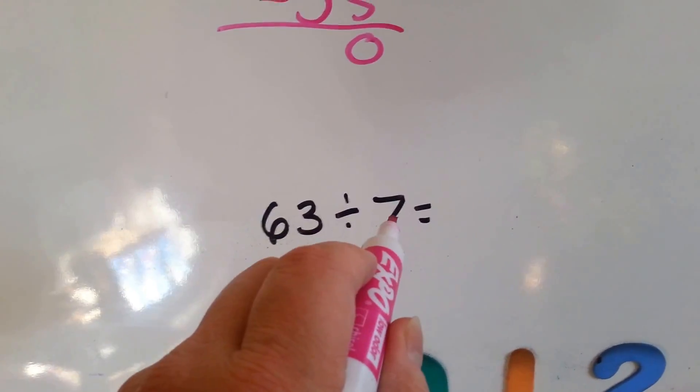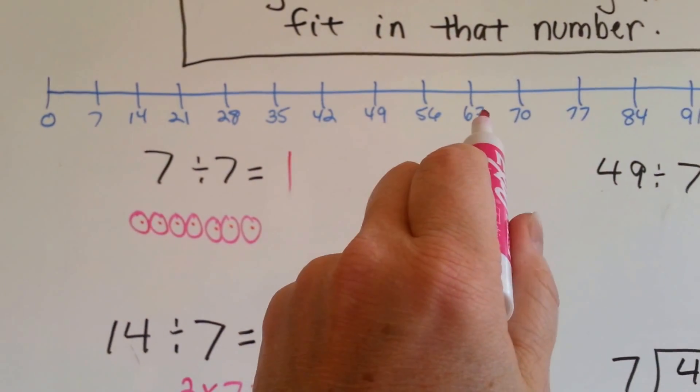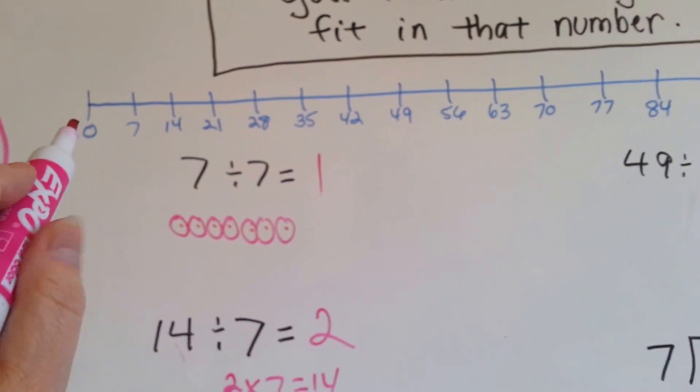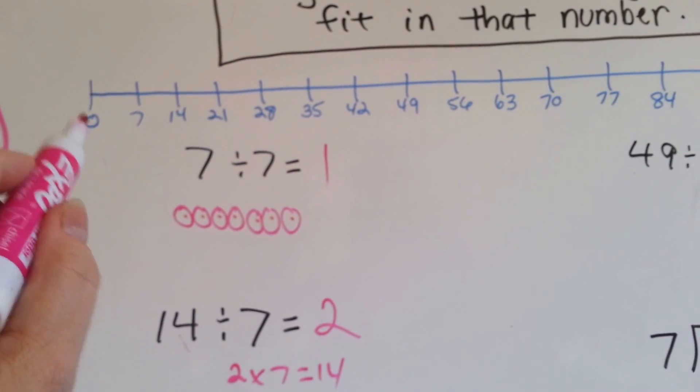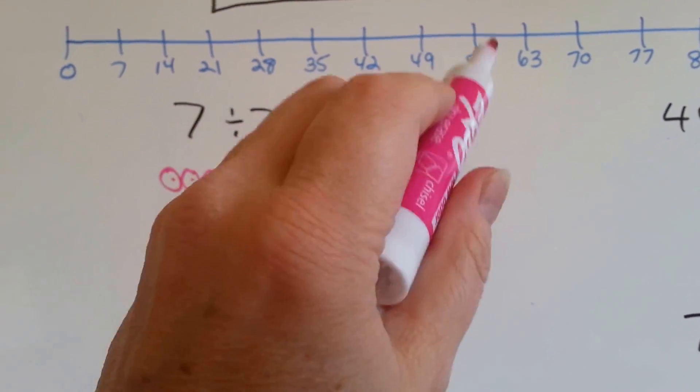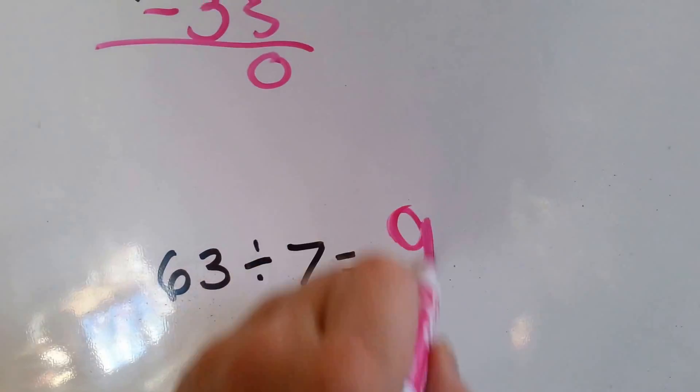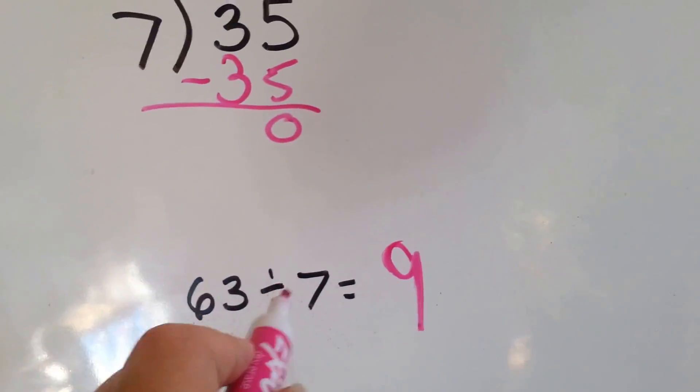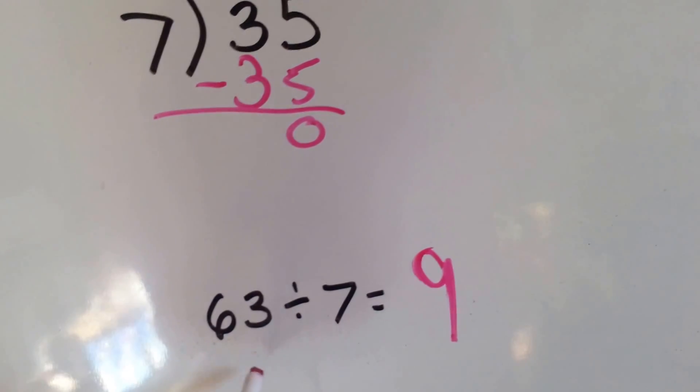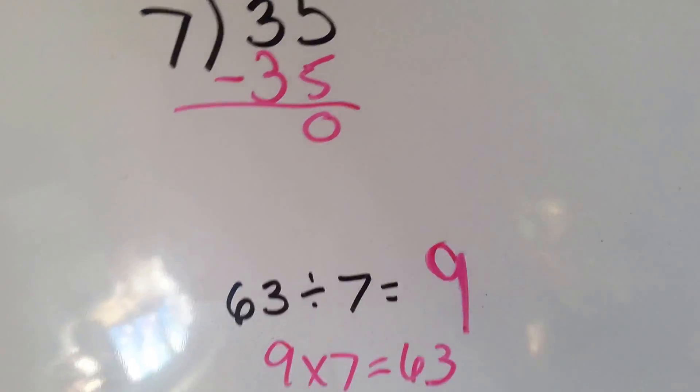63 divided by 7. Okay. Number line again. Here's the 63. Let's see how many times we skip count by 7 to get to 63. 1, 2, 3, 4, 5, 6, 7, 8, 9. 9. 63 divided by 7 equals 9. And you know what? 9 times 7 equals 63. See that?